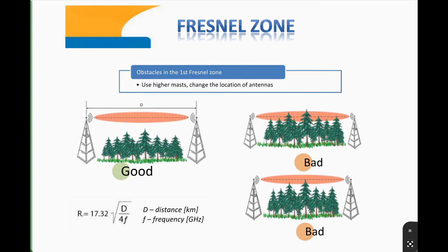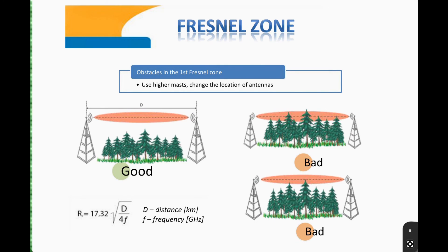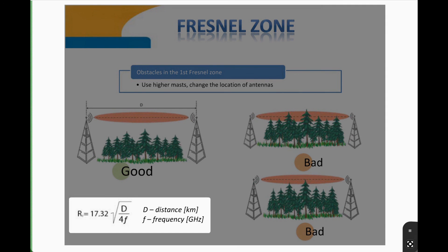Building a wireless link: keep the line of sight between the antennas. Remember that the Fresnel Zone, named after a French physicist, is also an area actively participating in transmission of radio signal energy. The shape of this area is an ellipse in longitudinal section and a circle in cross section. The radius of this circle is a function of the ratio of distances of the cross section to the antennas, and has its maximum value in the middle of the link.